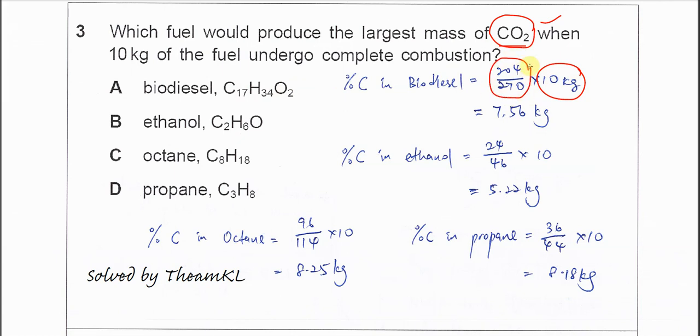The mass fraction times the mass of the fuel gives you the mass of carbon. For biodiesel, you get 7.56 kg. For ethanol, you do the same calculation.